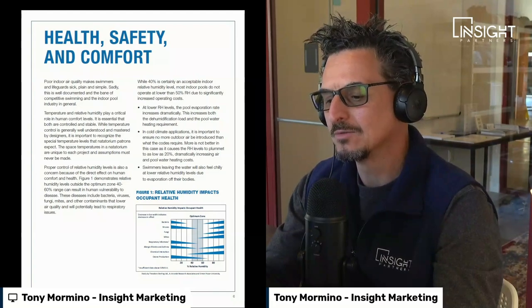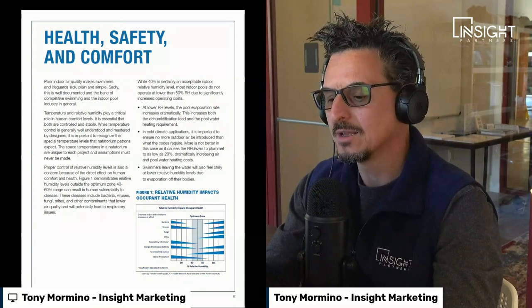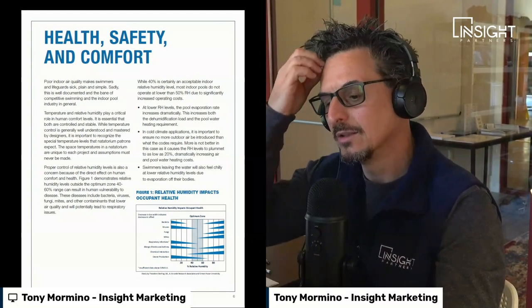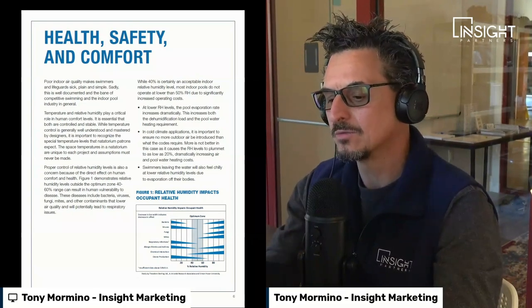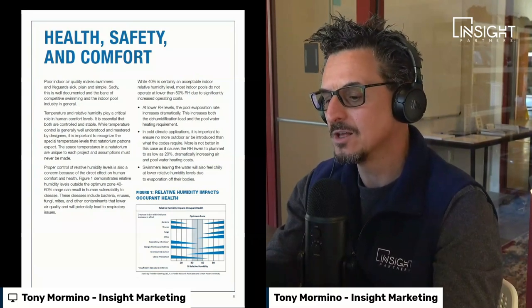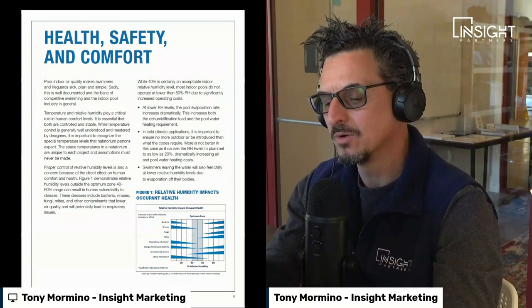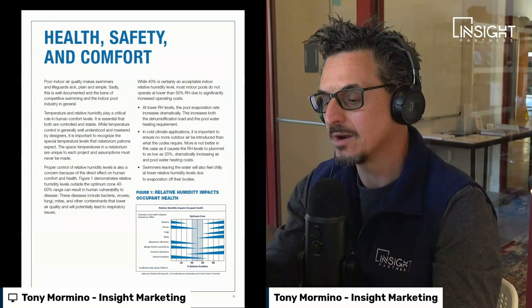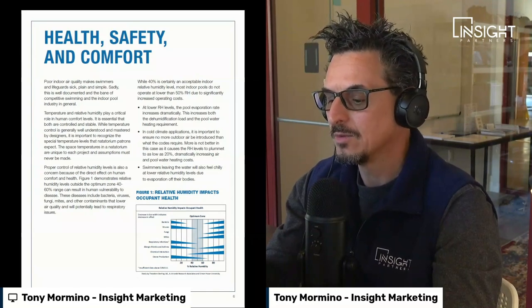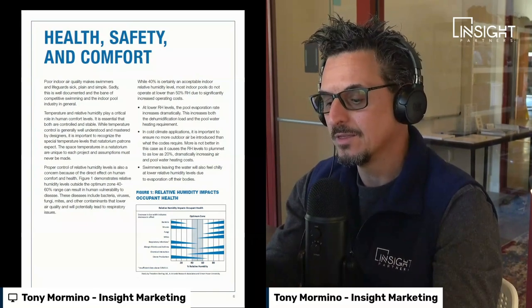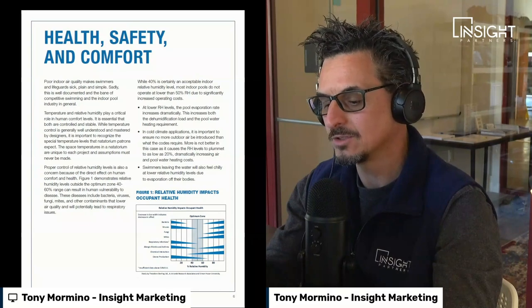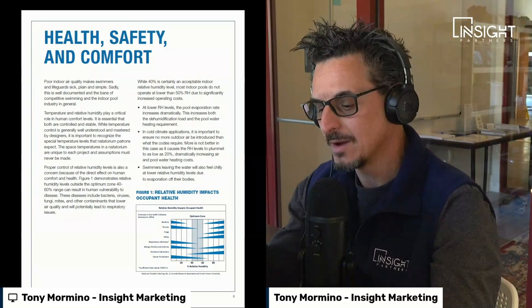While 40% is certainly an acceptable indoor relative humidity level, most indoor pools do not operate lower than 50% RH due to significantly increased operating costs. At lower RH levels, the pool evaporation rate increases dramatically, increasing both the dehumidification load and the pool water heating requirement. In cold climate applications, it is important to ensure that no more outdoor air be introduced than what the code requires — more is often not better, as it causes RH levels to plummet as low as 20%, dramatically increasing air and pool water heating costs.